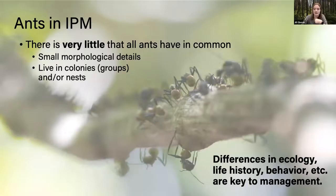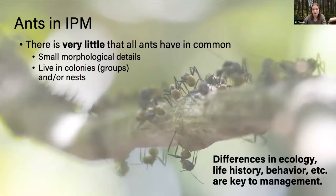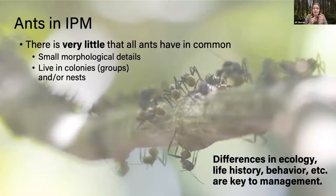As it relates to IPM, what matters is that there's very little you can say about ants in general. There are some morphological details that apply to all ants and they live in colonies, but even social structure varies a lot. I study diversity as the result of evolution, and it's this diversity — specifically differences in ecology, life history, and behavior — that are extremely important if you're encountering ant pests and need to control them.